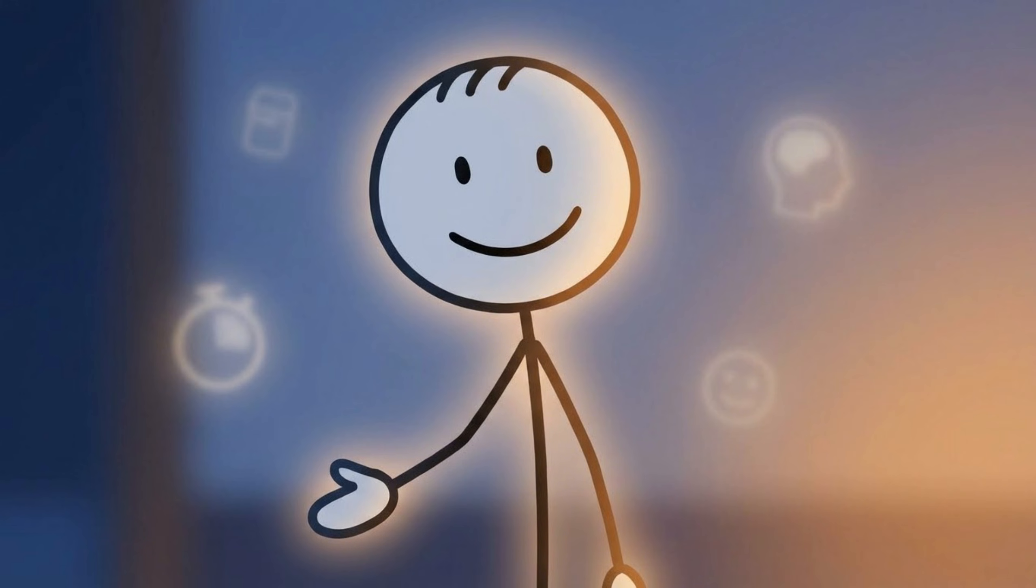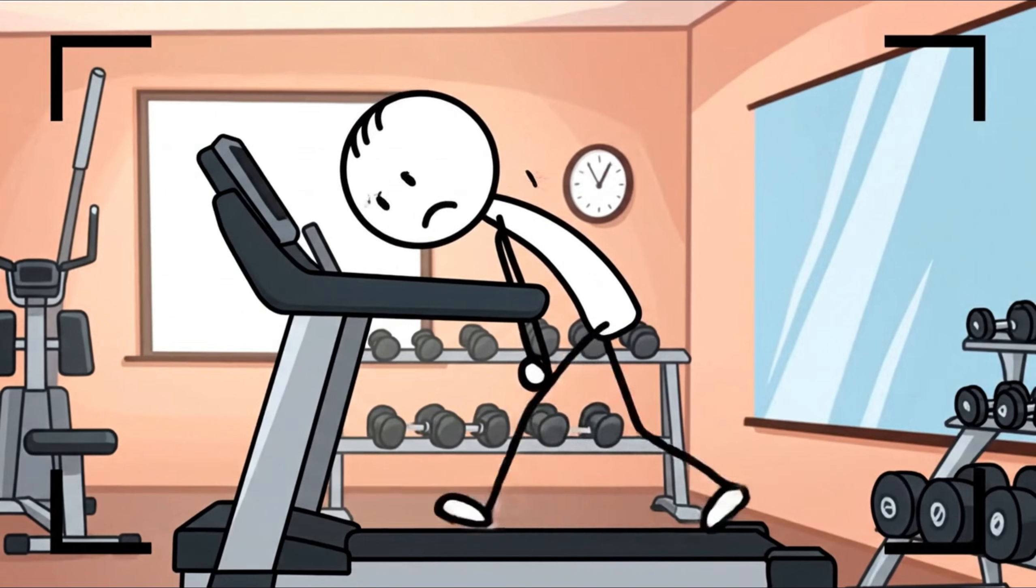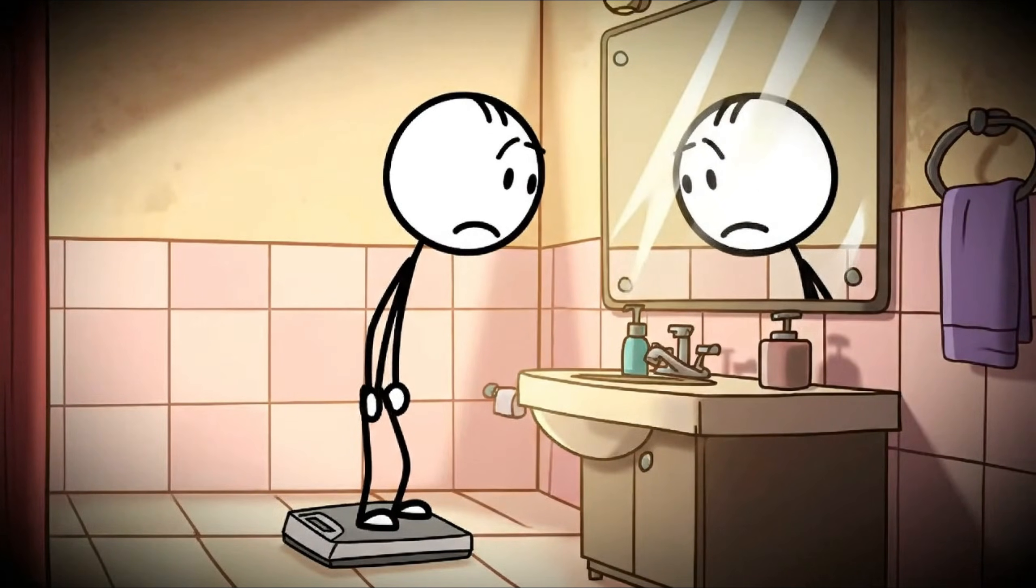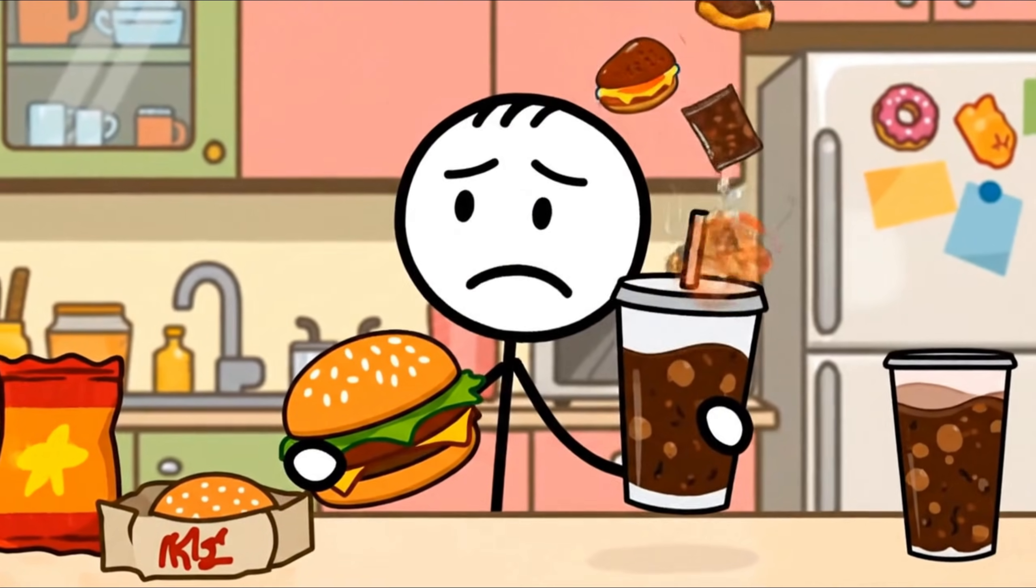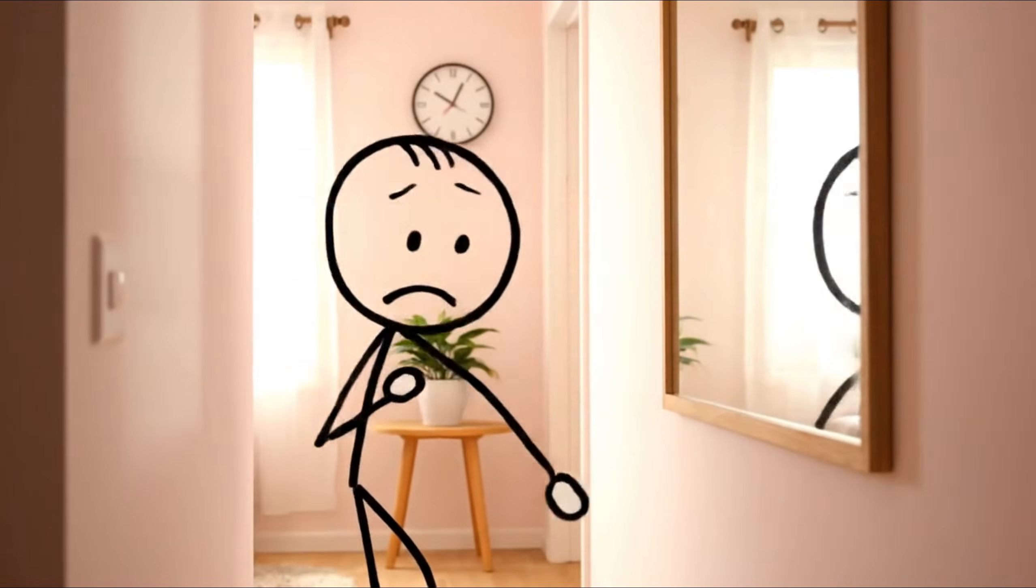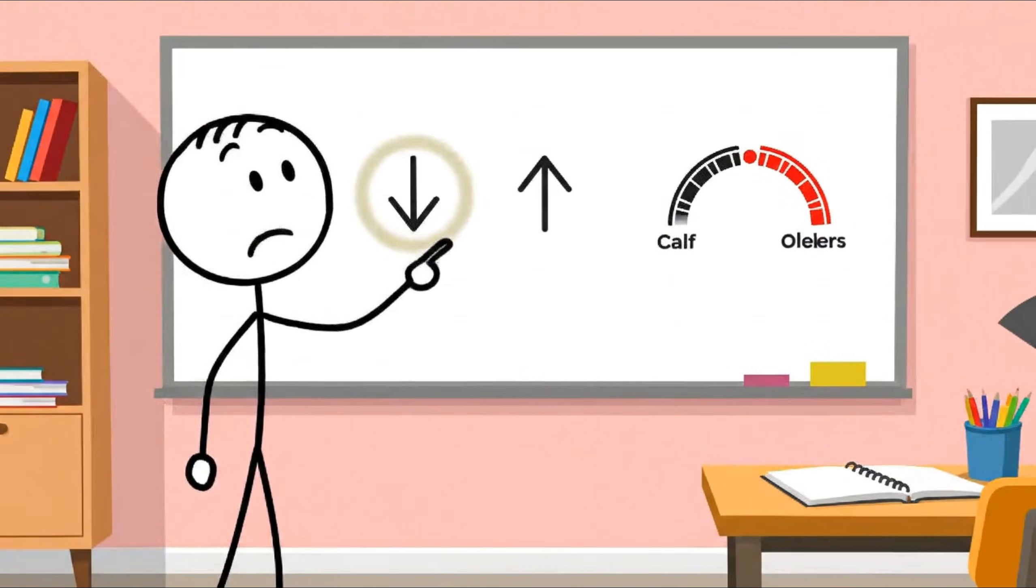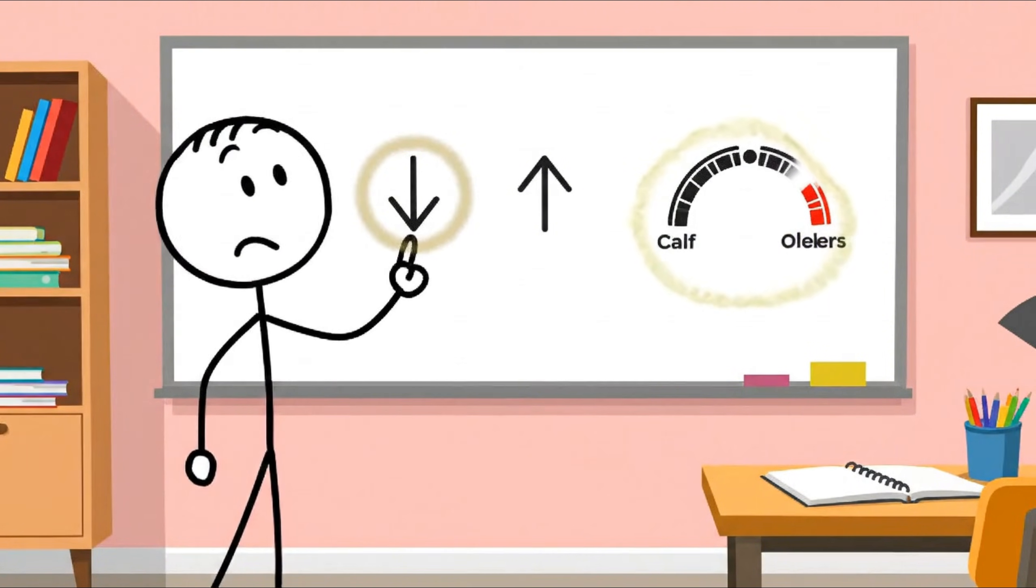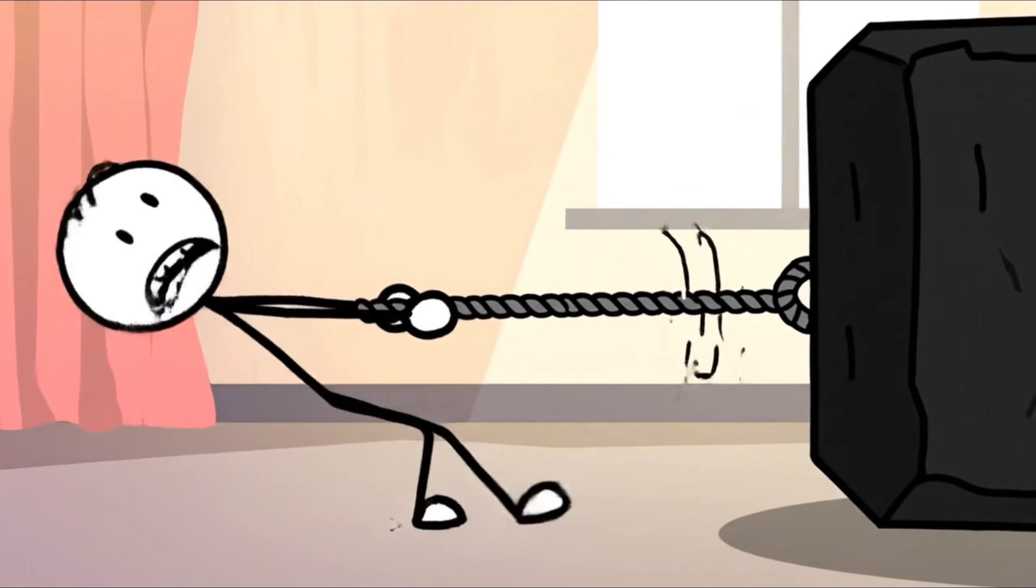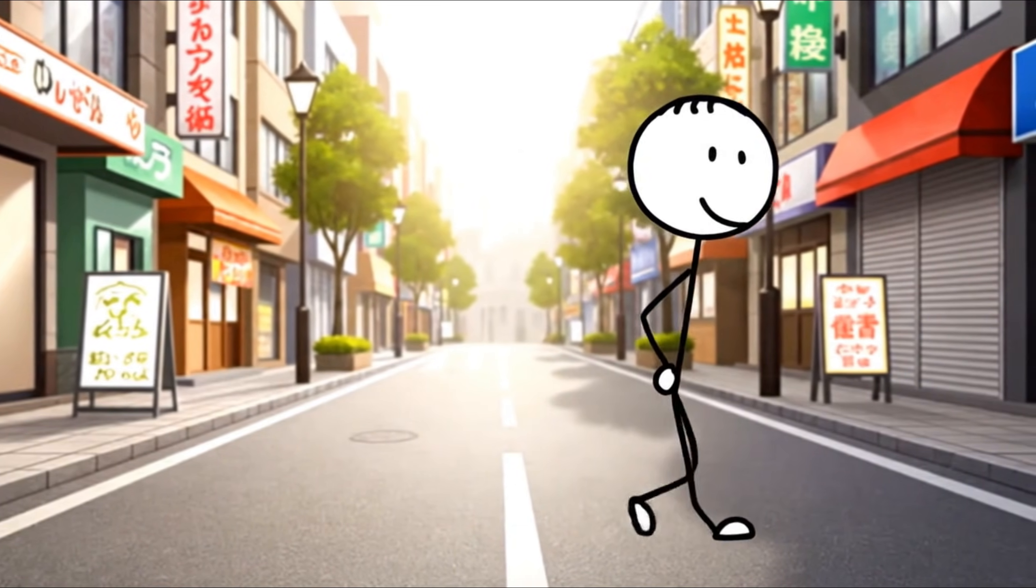Once you understand why HIIT works, the next mistake people make is assuming the specific exercise doesn't matter. It does. Not because one machine magically burns more fat than another, but because recovery determines whether you can sustain the process. Cycling tends to be the smartest place to start. Multiple studies have shown that compared to other HIIT modalities, cycling produces less muscle soreness and less structural muscle damage, which means you're able to recover faster and show up strong for your weight training sessions. There's also a mechanical reason this matters - the range of motion in cycling closely resembles patterns you already train in the gym, like squatting and pressing. That overlap helps reinforce strength instead of competing with it. Running and rowing can absolutely work as well, especially if you're already conditioned for them, because they also mimic common lifting patterns.